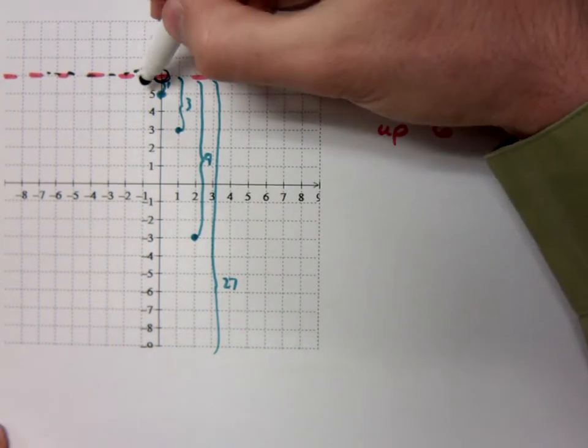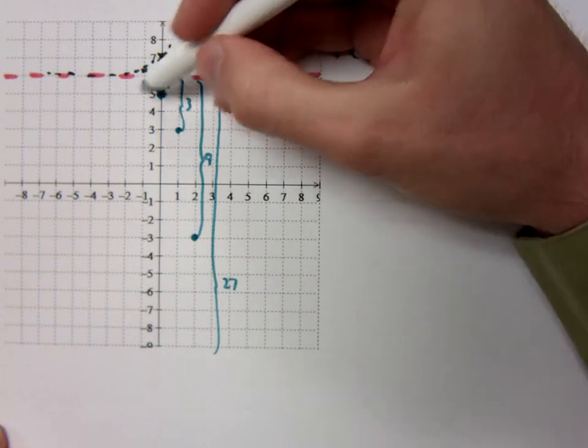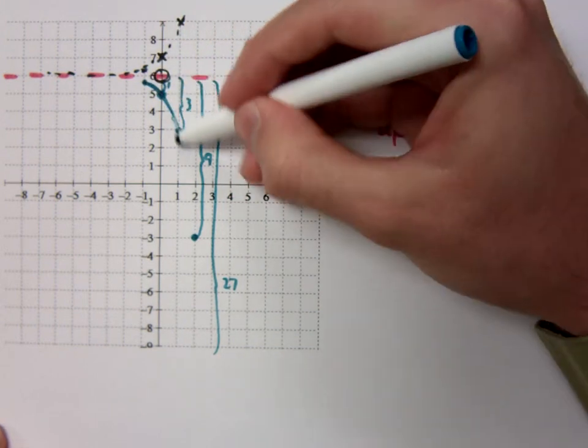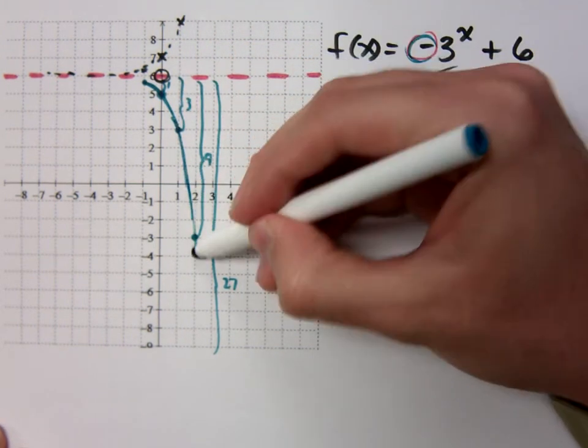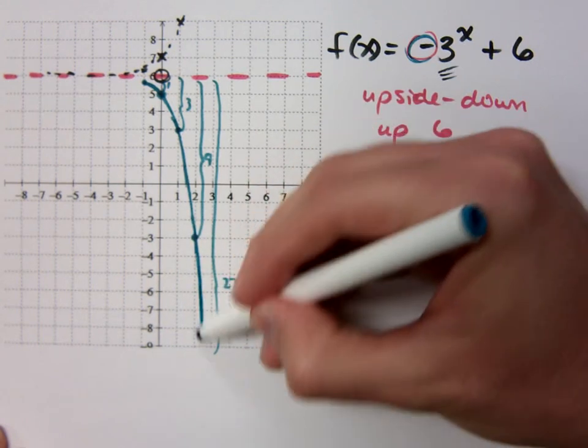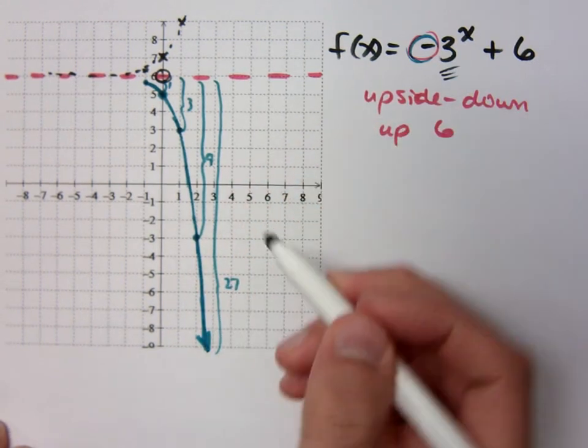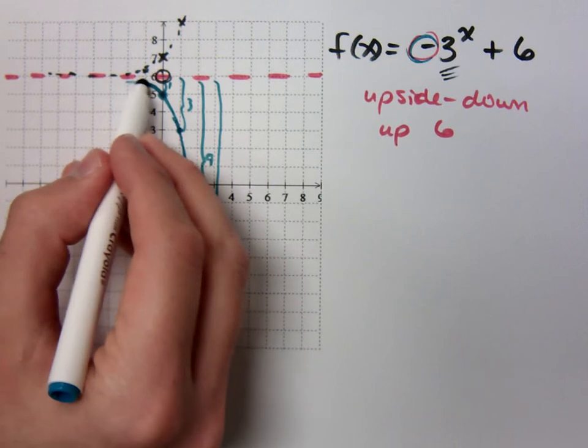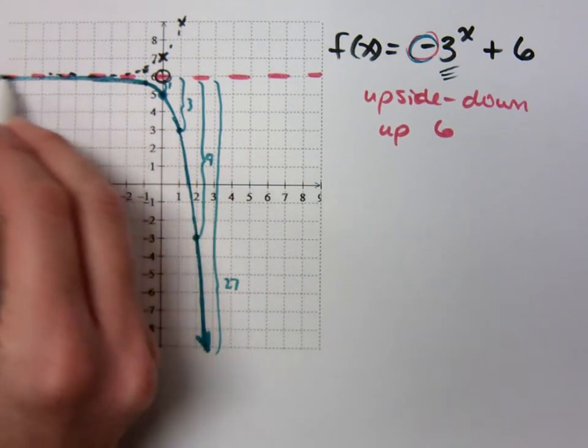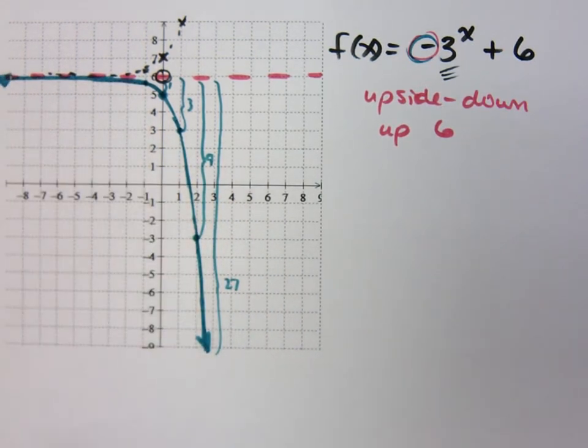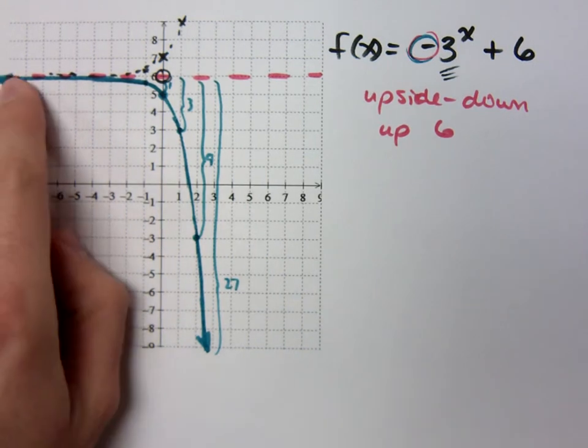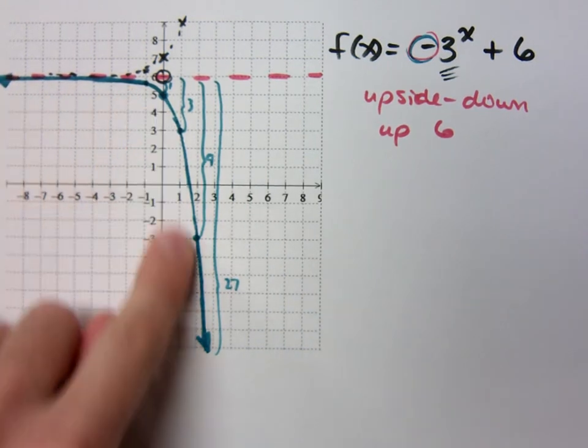So if I try to connect these points, I should have something that looks like this. He doesn't start off growing very much, but then he gets really crazy.